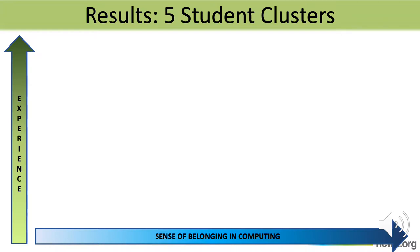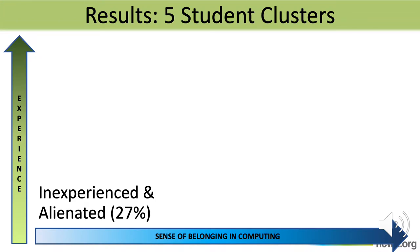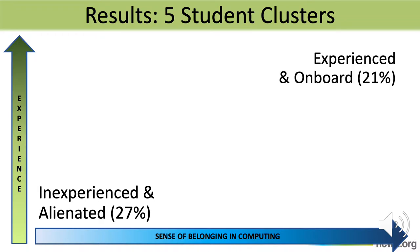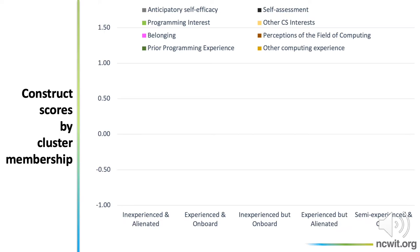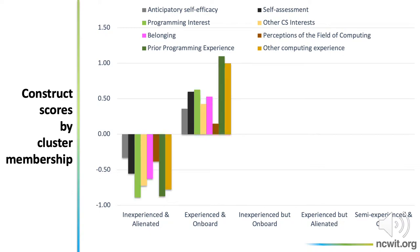The best clustering solution yielded five groups. We've given them some shorthand descriptors, such as 'inexperienced and alienated,' to help with the discussion. To give you a quick sense of the groups and their relative sizes, in this diagram the groups are plotted against just two of the constructs — experience and sense of belonging in computing. This graph plots the mean score on each construct, shown at the top of the graph, for each of the five groups.